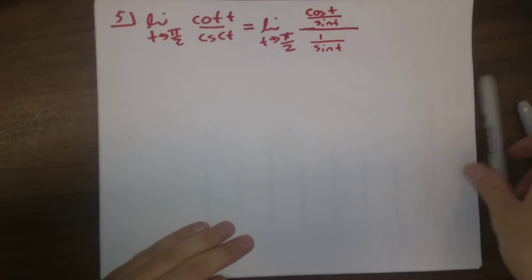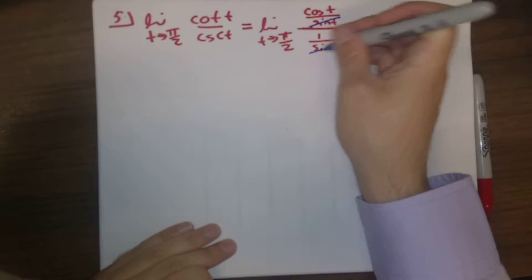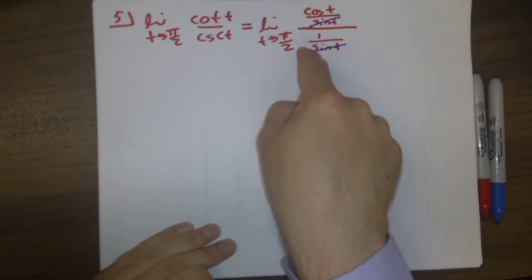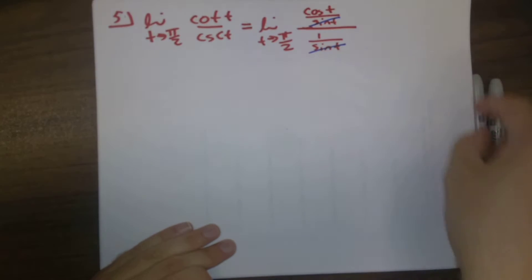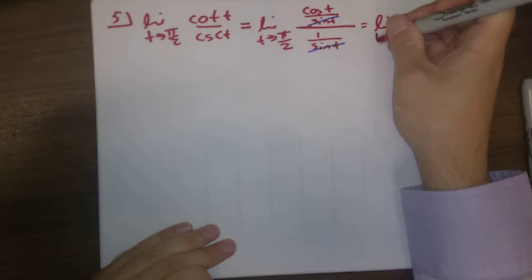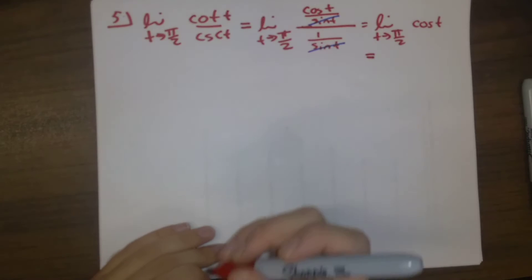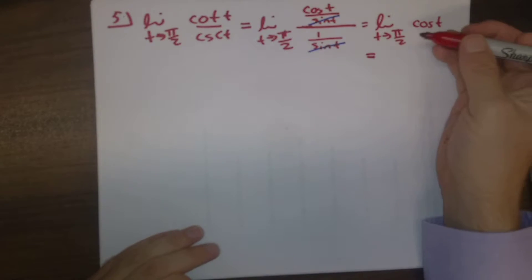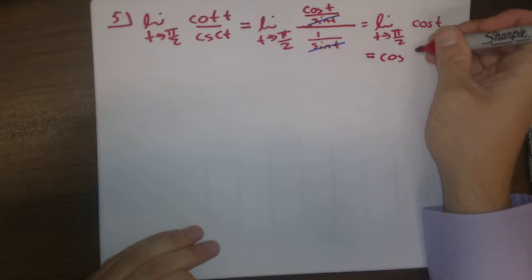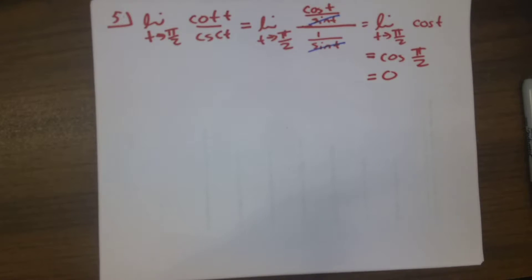We can rearrange this, and we can see those sines are going to cancel because when we flip that, sine of t comes upstairs. So we're just left with the limit as t goes to pi over two of cosine t. And this is continuous, so it's just cosine of pi over two, and cosine of pi over two is zero, which is our final answer.